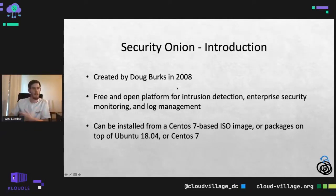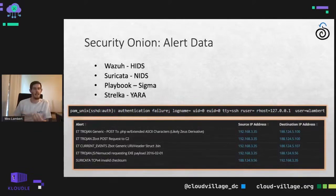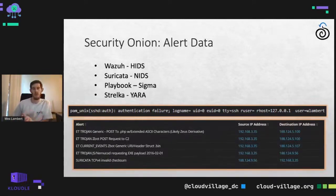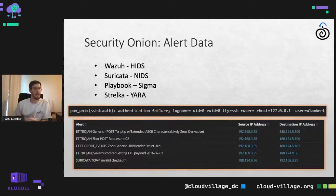One of the types of data we get on Security Onion is alert data — that data that tells us that something is wrong or could be wrong. Some of the tools we use to gather that alert data are WAZUH, which is a host-based intrusion detection system formerly known as OSSEC. It does things like file integrity monitoring, pick up Windows logs, ship application logs — that's the host-based component of alert data generated in Security Onion.